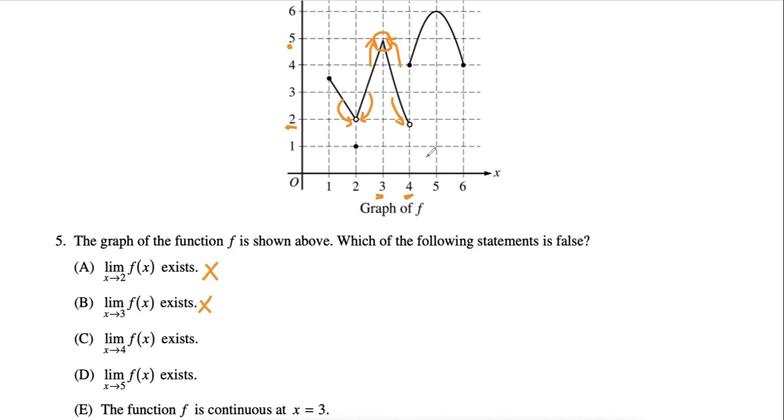less than 2, and if we approach it from the right, we'll get 4. As we can see, these are two different points, so the left side does not equal the right side, and C will be our answer.